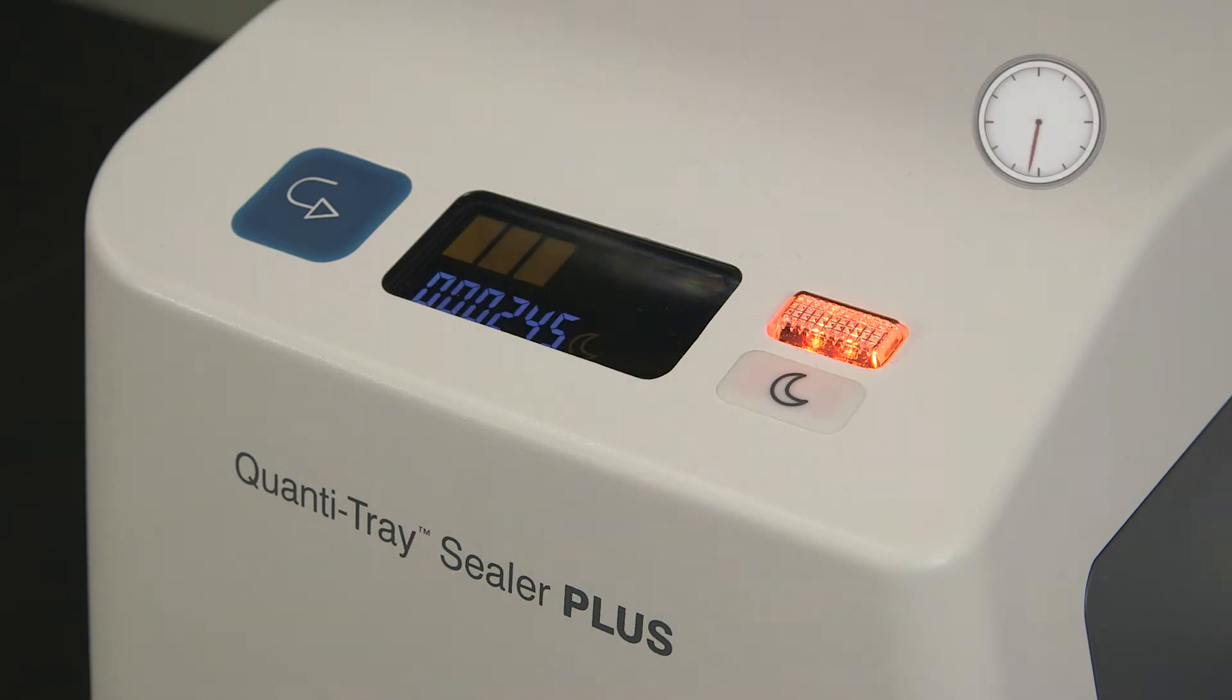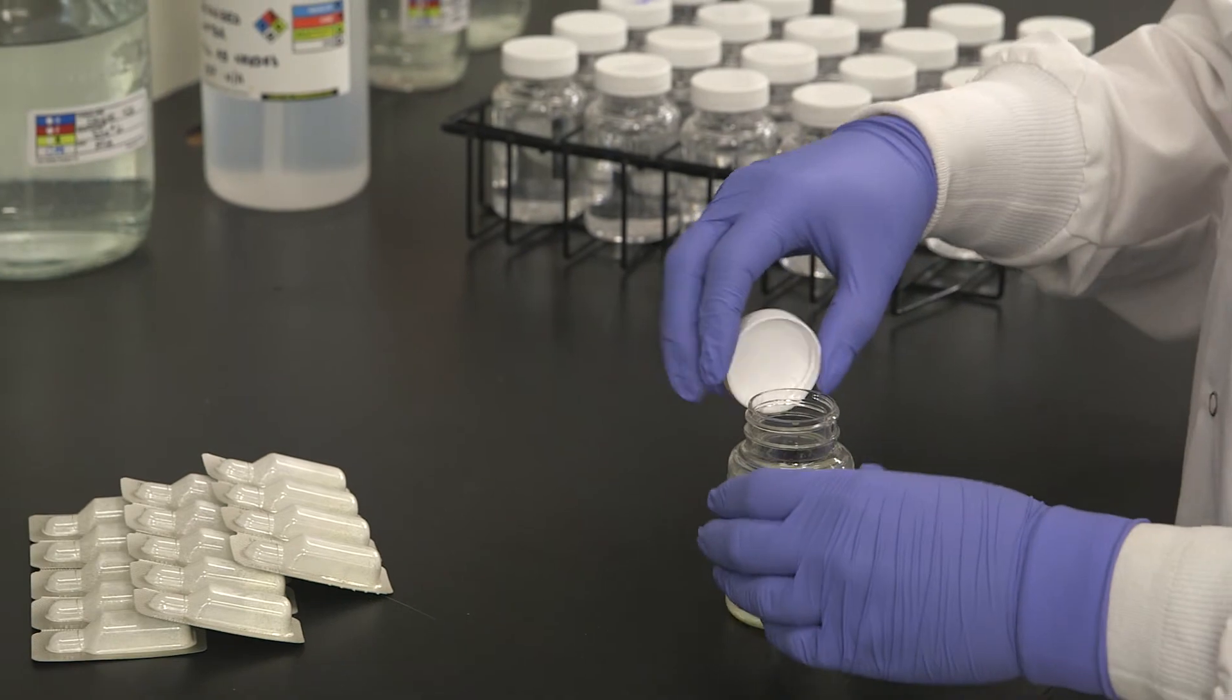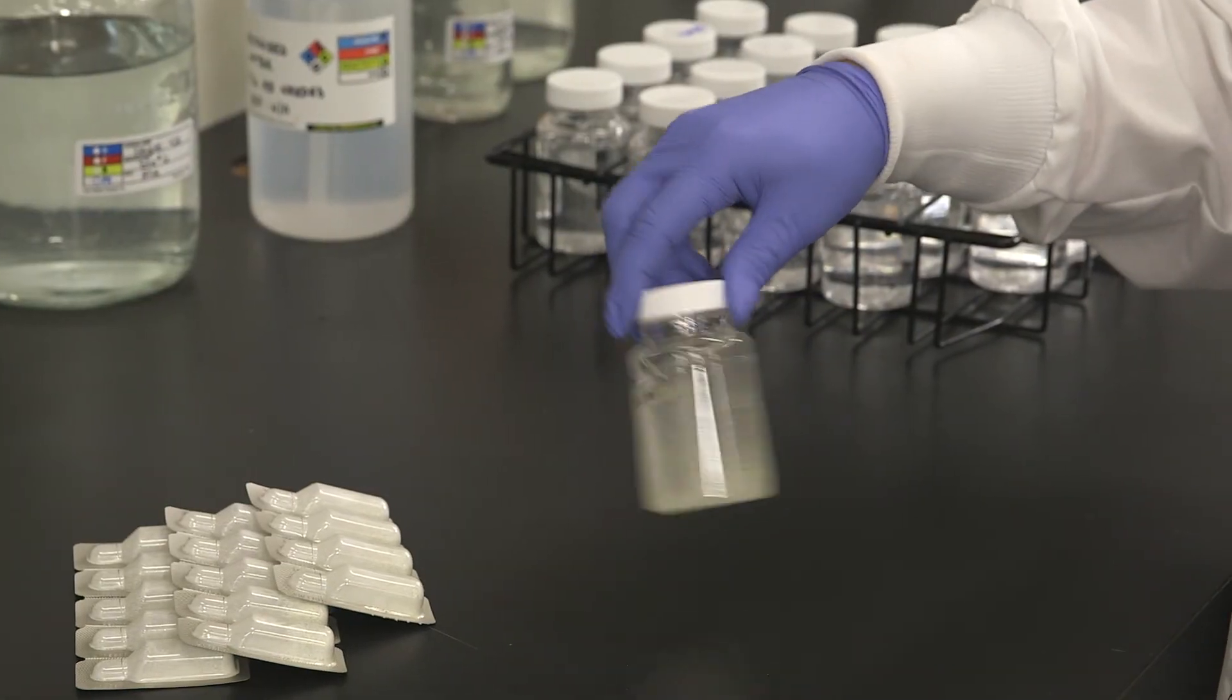Turn on the sealer and then wait until a green bar appears on the display. The sealer has now reached operating temperature. Add the ColiLert powder to a 100ml sample and cap the vessel. Shake until the reagent dissolves.